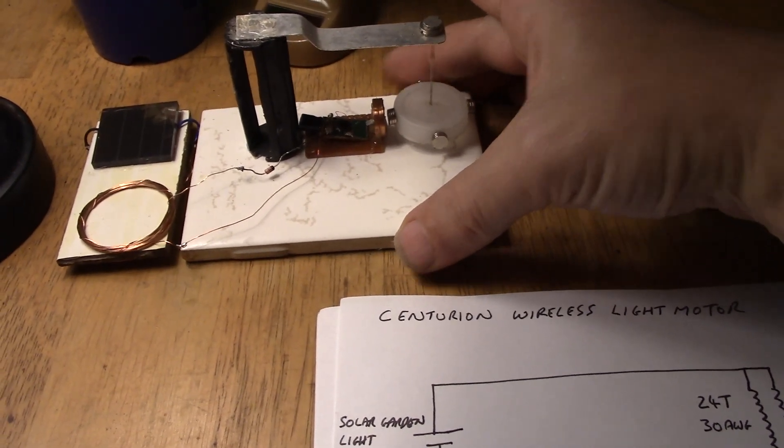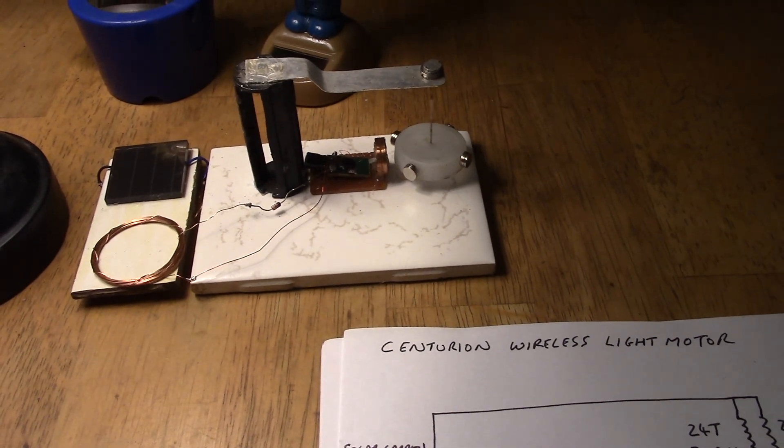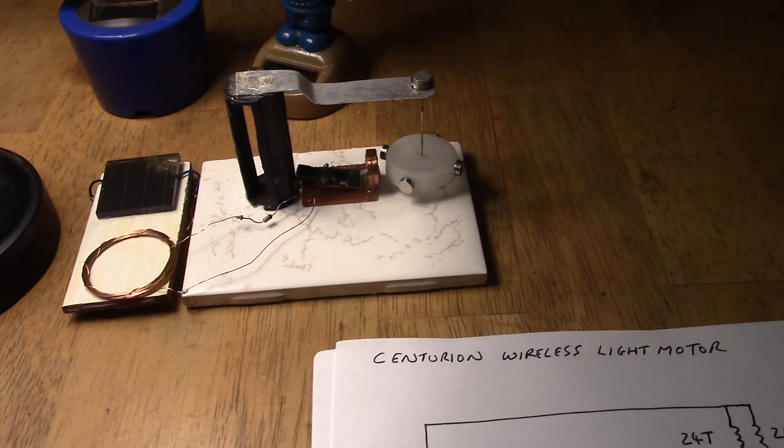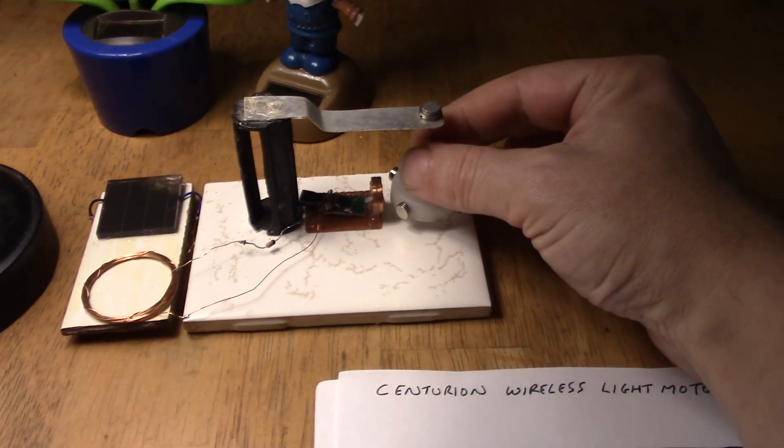What we should see is the rotor start to kick around. I may give it some assistance because it's wobbling around. They do auto start. I'll put it there in front of the coil.